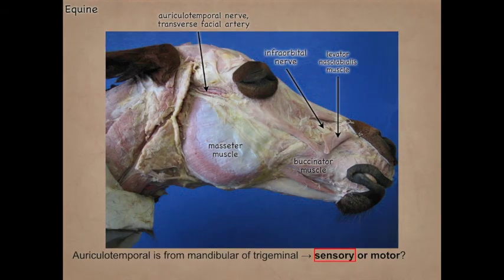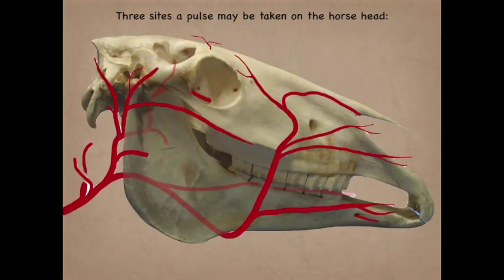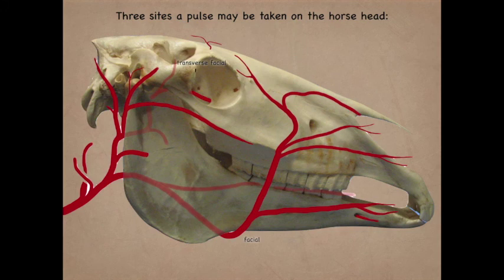There are three places we can take a pulse from a horse's head. The facial artery as it's coming around the mandible is the most common and easiest — usually you'll palpate that just on the medial side of the mandible. The transverse facial, and then just on the caudal edge of the mandible you may find the masseteric artery, which is sometimes a little bit harder to find.